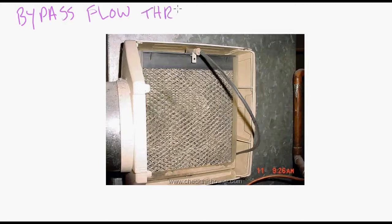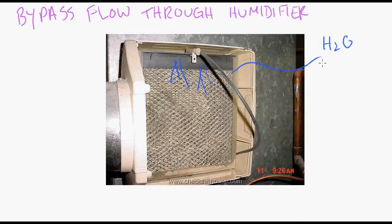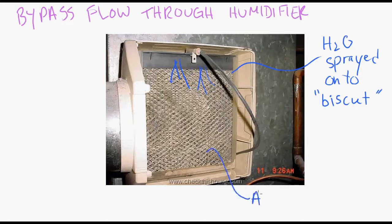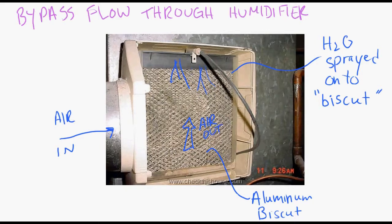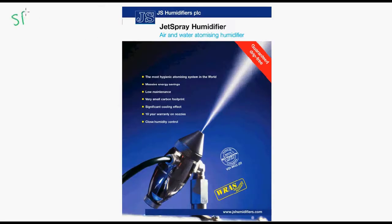Here's another system called the bypass flow through humidifier. Here you have this porous aluminum. And water gets sprayed onto this porous aluminum so it gets wet on it. We call this aluminum piece a biscuit. I'm not sure why. So you have this aluminum biscuit here. Air comes in through the duct and diffuses through this wet aluminum biscuit. And only the water that's needed is sprayed onto this biscuit. So you don't have a pool of water there.